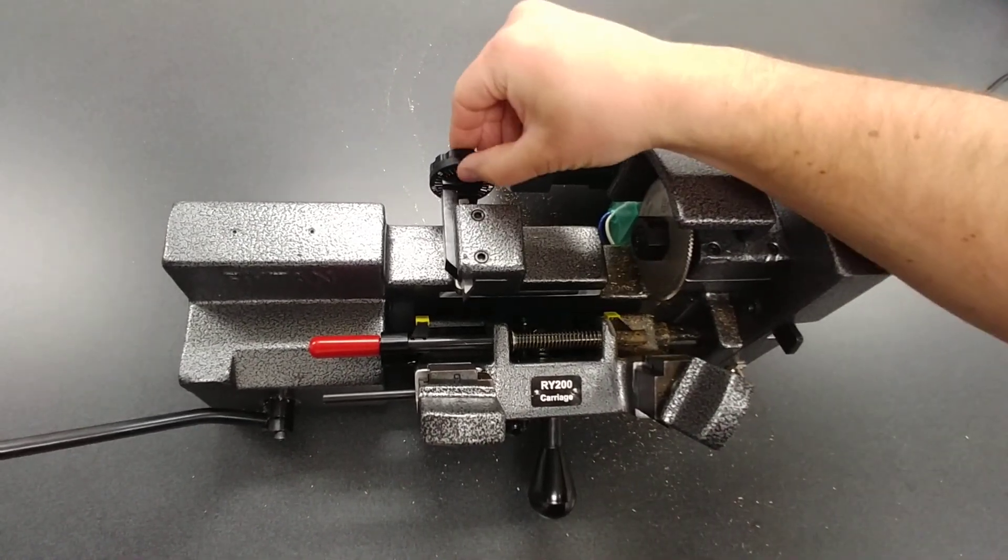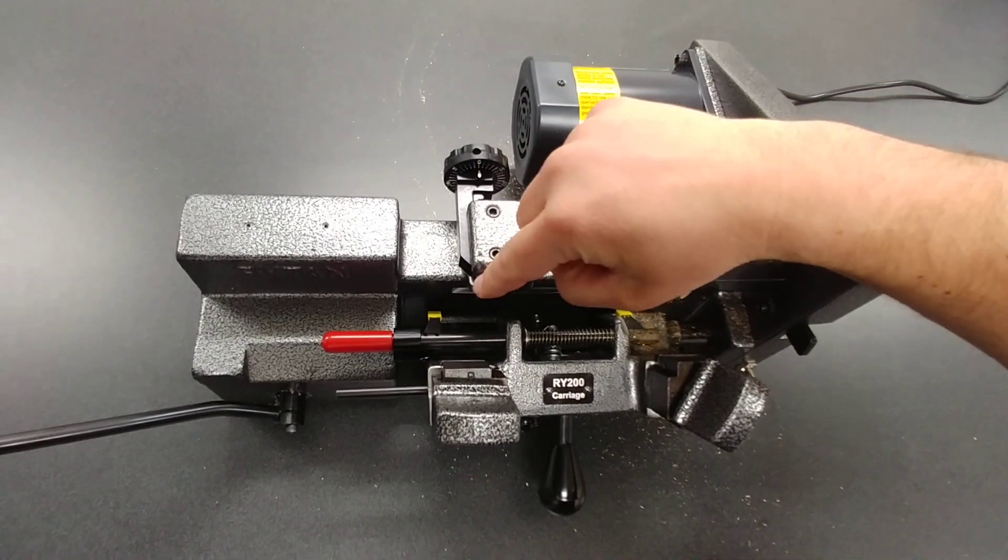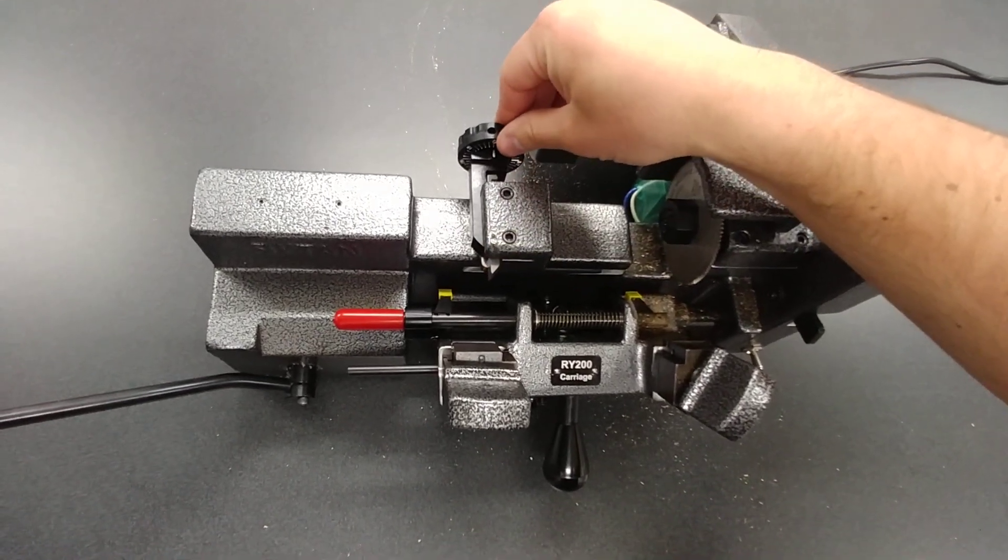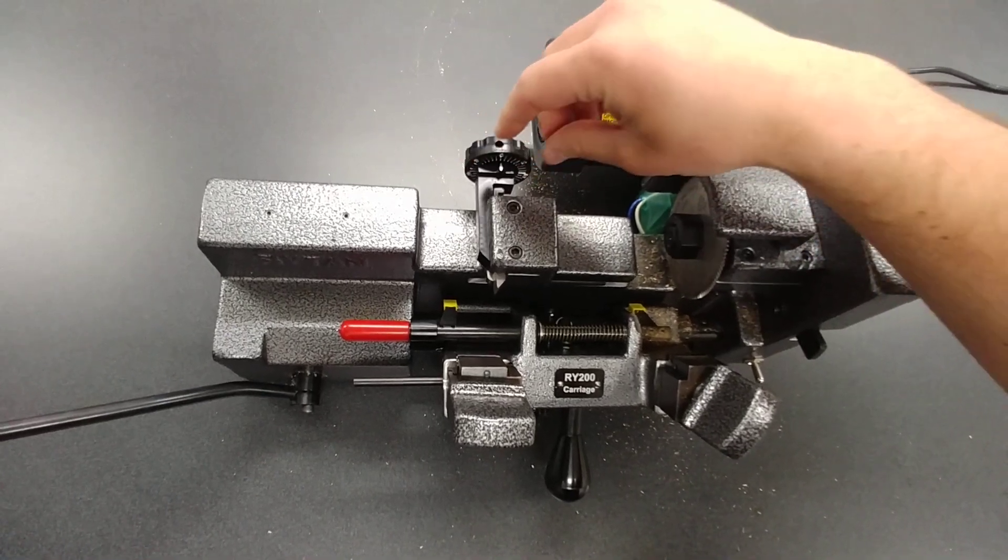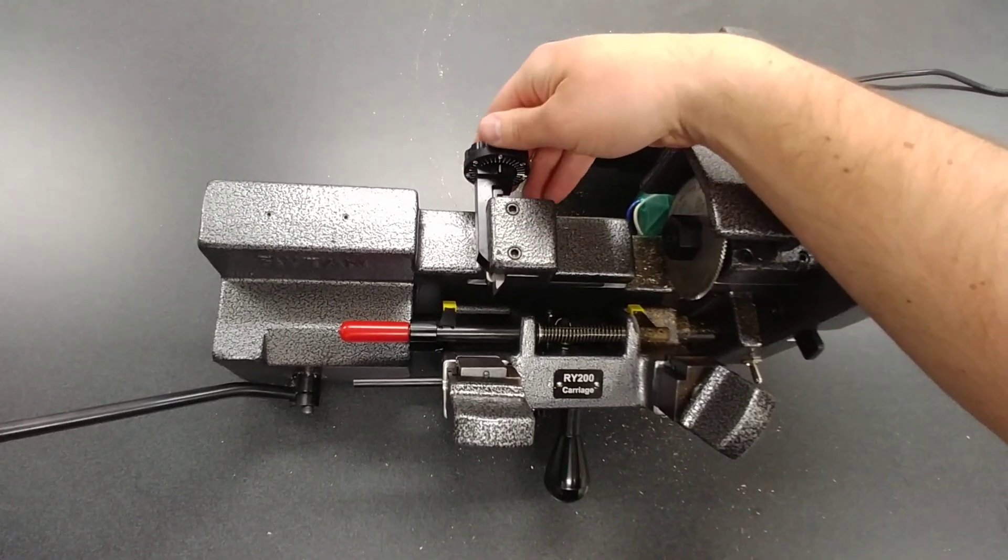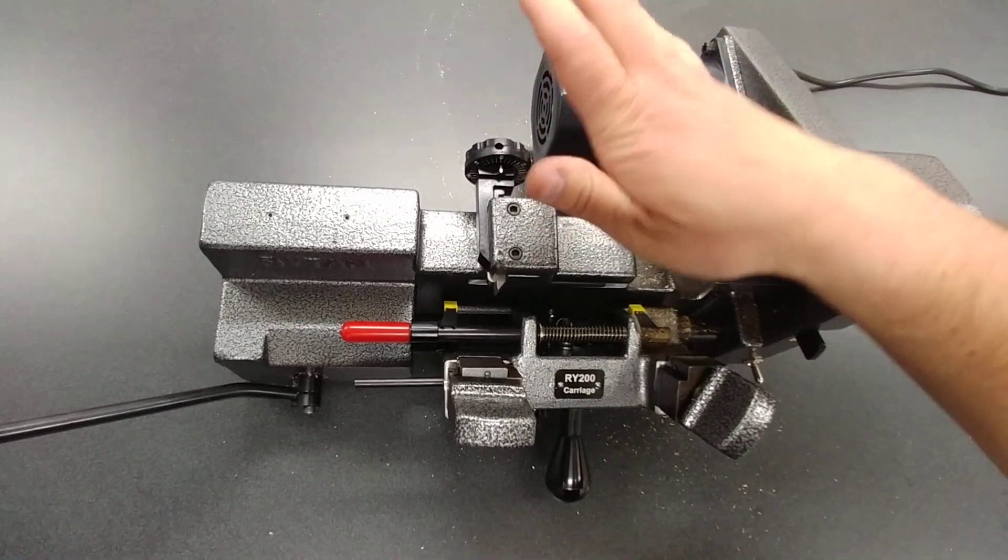Next, it has the micro adjuster for the tracer. So if your keys do start to get a little misaligned in the depth, you can easily just loosen a couple allen wrenches and adjust this and keep it accurate.